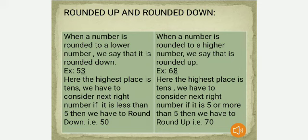In the right column: when a number is rounded to a higher number, we say it is rounded up. For example, take 68. The highest place is tens. The next right digit is 8, which is 5 or more than 5, so we round up. The result is 70.